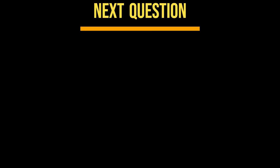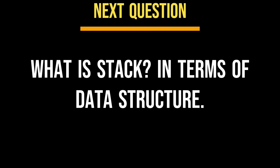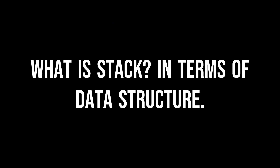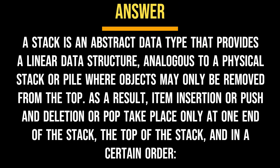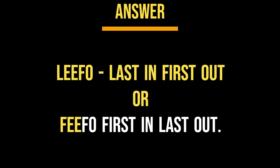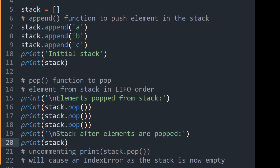What is a stack in terms of data structure? A stack is an abstract data type that provides a linear data structure, analogous to a physical stack or pile where objects may only be removed from the top. As a result, item insertion (push) and deletion (pop) take place only at one end of the stack — the top — and in a certain order: LIFO (last in first out) or FILO (first in last out). Here is an example of stack implementation in Python.